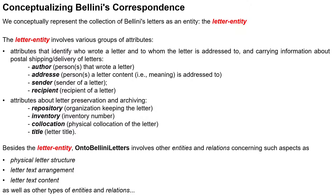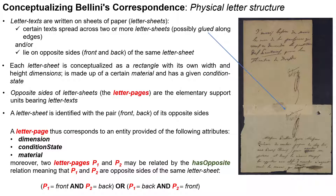Regarding physical letter structure: letter texts are written on sheets of paper called letter sheets. Certain texts spread across two or more letter sheets, possibly glued along edges, and may lie on opposite sides — the front and the back — of the same letter sheet. Each letter sheet is conceptualized as a rectangle with its own width and height dimensions, is made of a certain material, and has a given condition state. Opposite sides of letter sheets, called letter pages, are the elementary support units bearing letter texts. Two letter pages may be related by the as-opposite relation, meaning they are opposite sides of the same letter sheet.